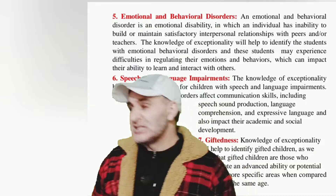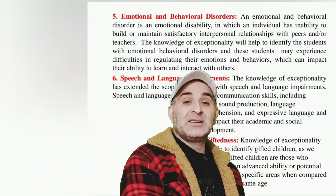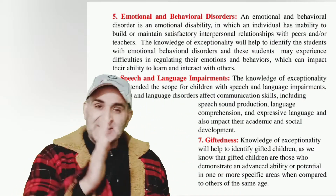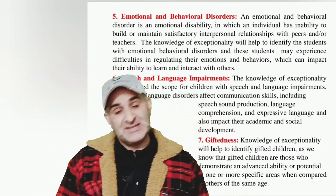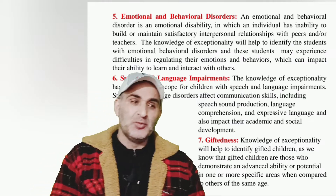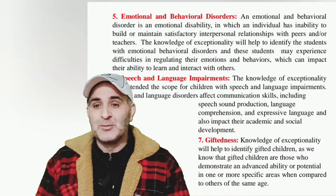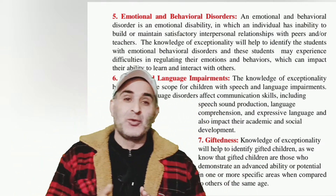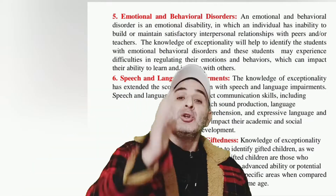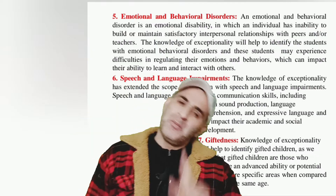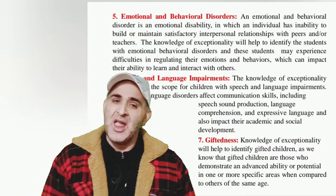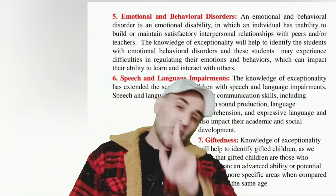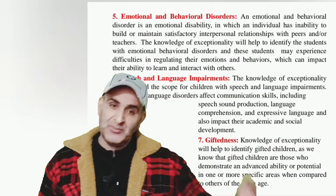Number six: Speech and Language Impairments. Knowledge of exceptionality helps us to identify those children who possess disability in the form of speech and language. These children have the problem of stuttering and articulation. Their language is not expressive, and their comprehension power is very weak due to speech and language impairment. Finally, speech and language impairment affects their academic performance and social development — these children have poor social development and are weak in the academic aspect as well.